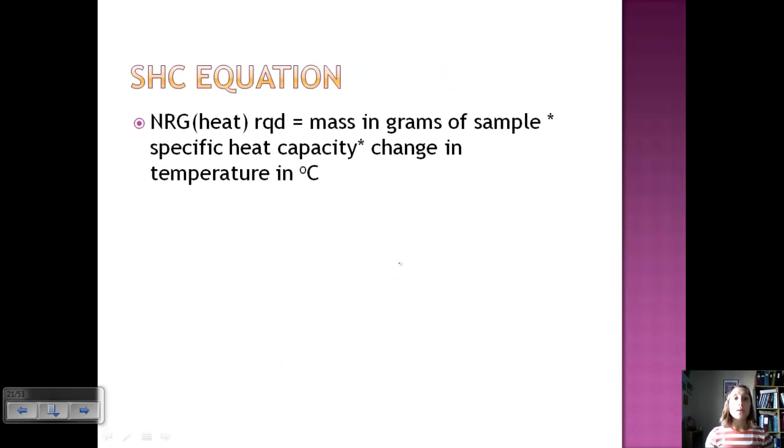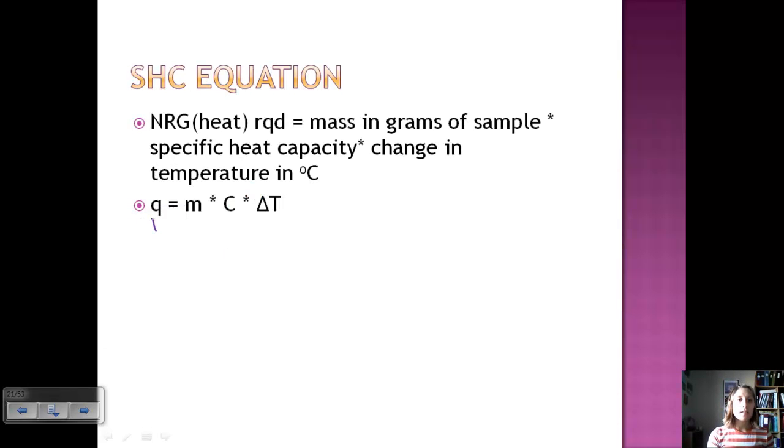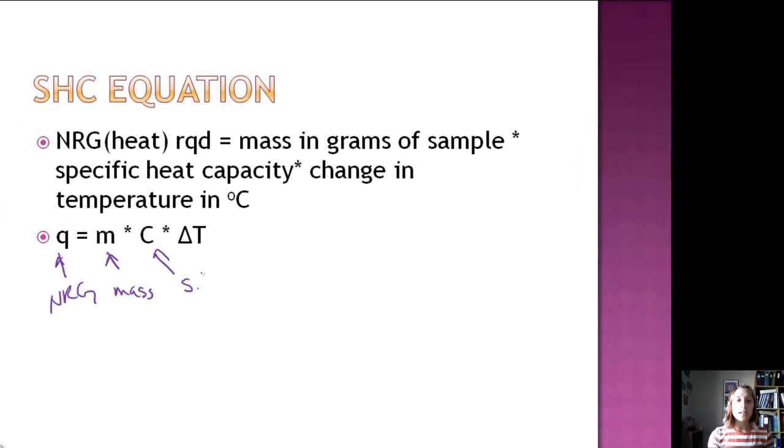So let's look at how you might solve for it. If you want to find the energy or heat required to heat something up or increase the temperature, you need the mass, you need the specific heat capacity because it depends on identity, and you need the change in temperature. Now if your heat capacity is in degrees Celsius, then you need your temperature in degrees Celsius. So it's important to look at your units. Here's our equation: Q represents heat or energy, here's our mass, C is specific heat capacity, and here's our change in temperature. So just pay attention to your units.